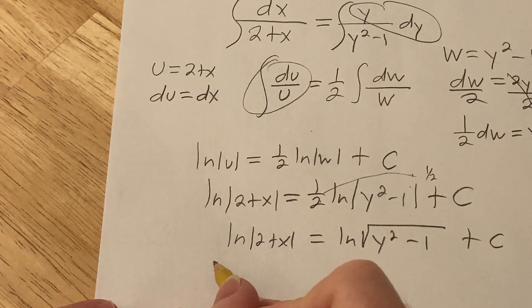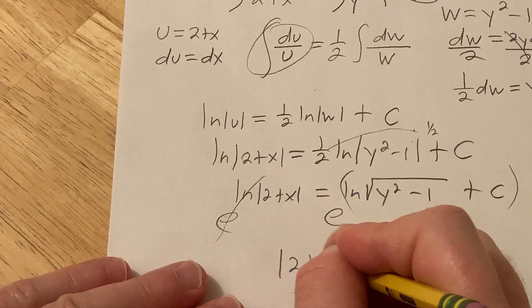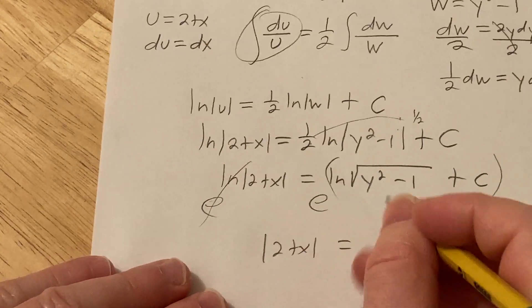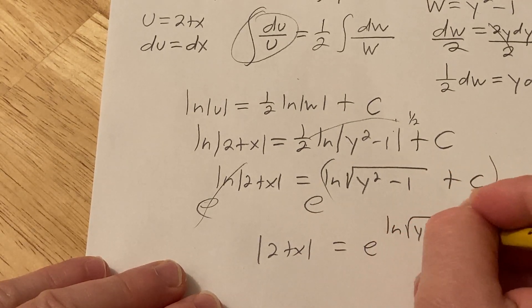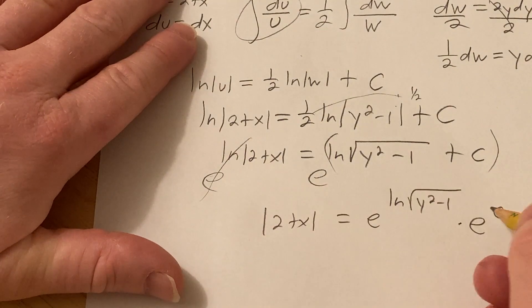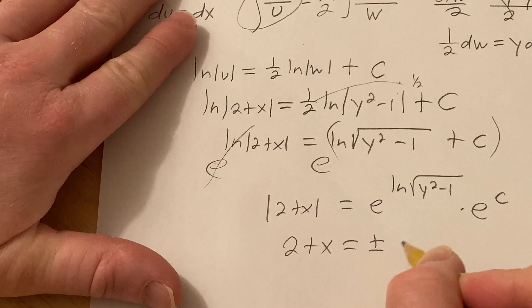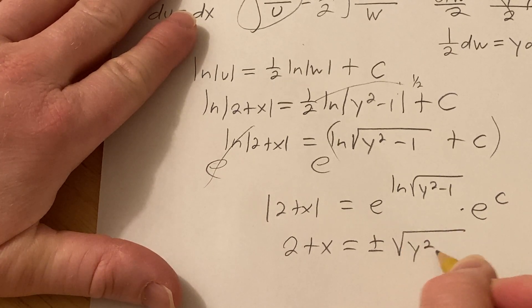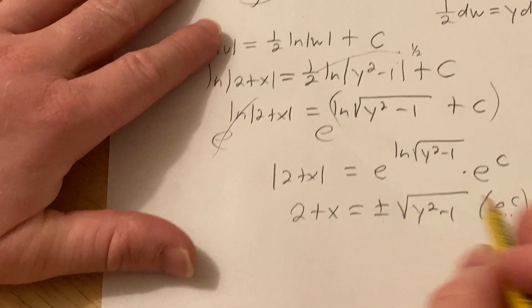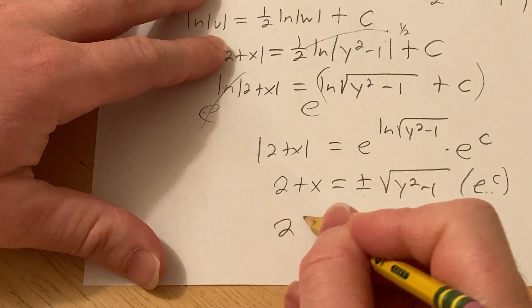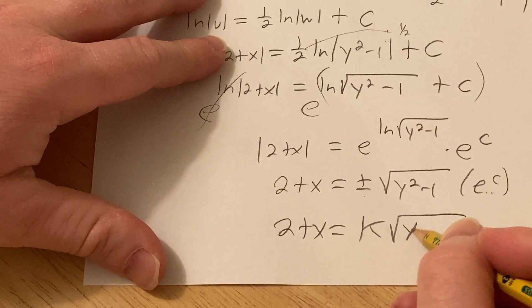Then you can exponentiate. So this goes away. We get 2 plus x equals. And then we can write this as e to the ln square root y squared minus 1 times e to the c. Drop the absolute value. You get a plus or minus. Times e to the c. Let's call this something else. Let's take plus or minus e to the c and call it k. This will be 2 plus x equals k square root y squared minus 1.